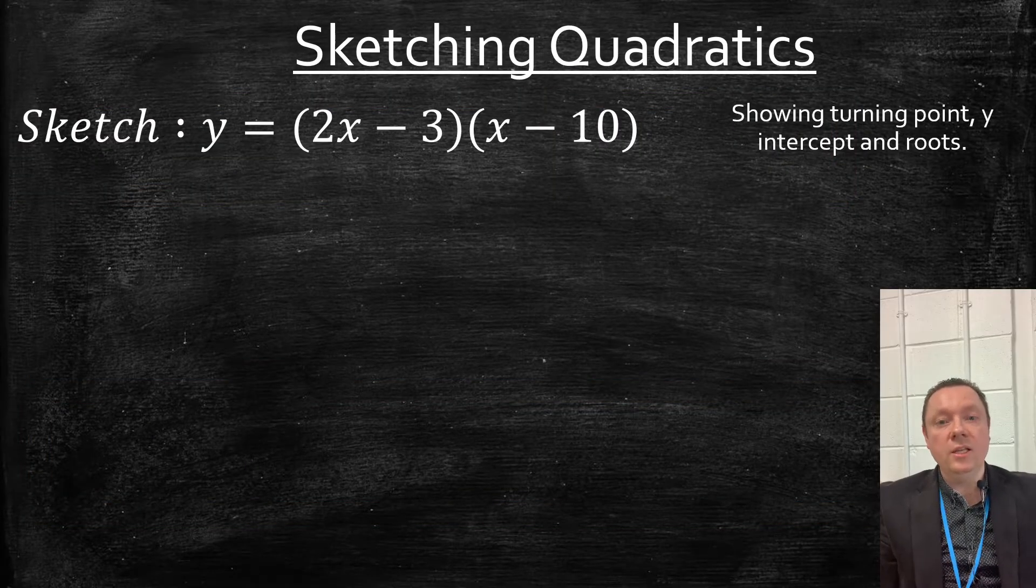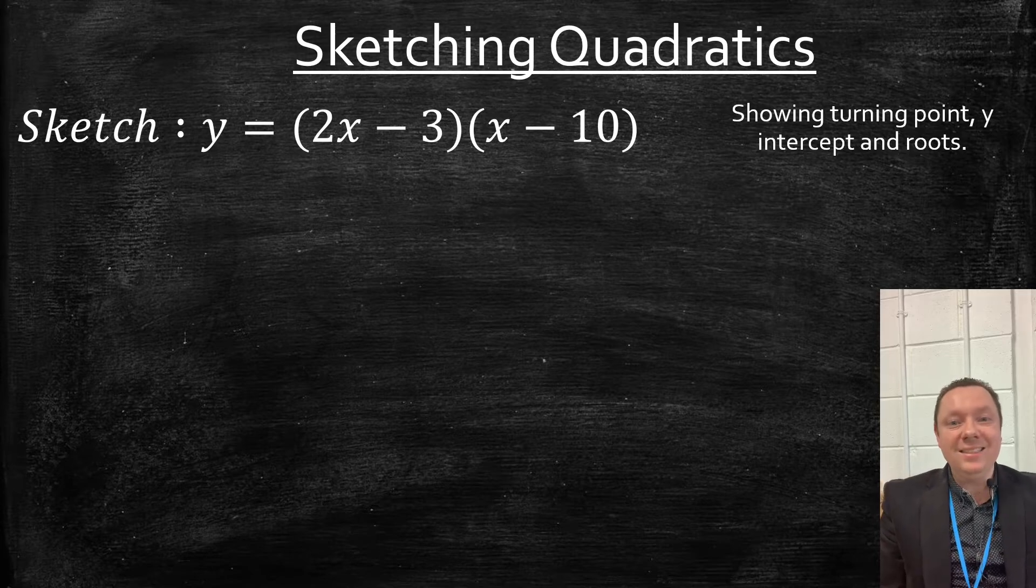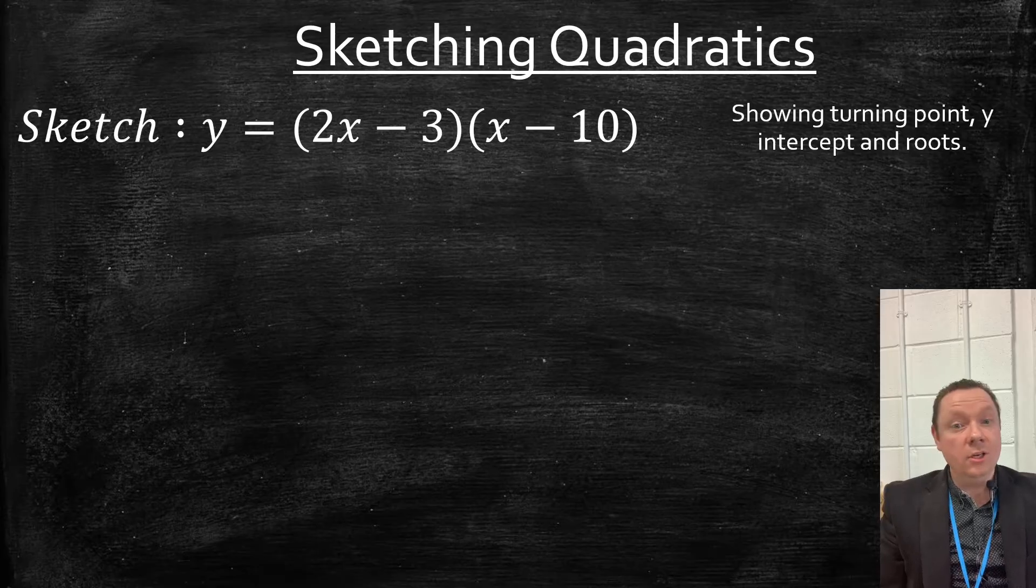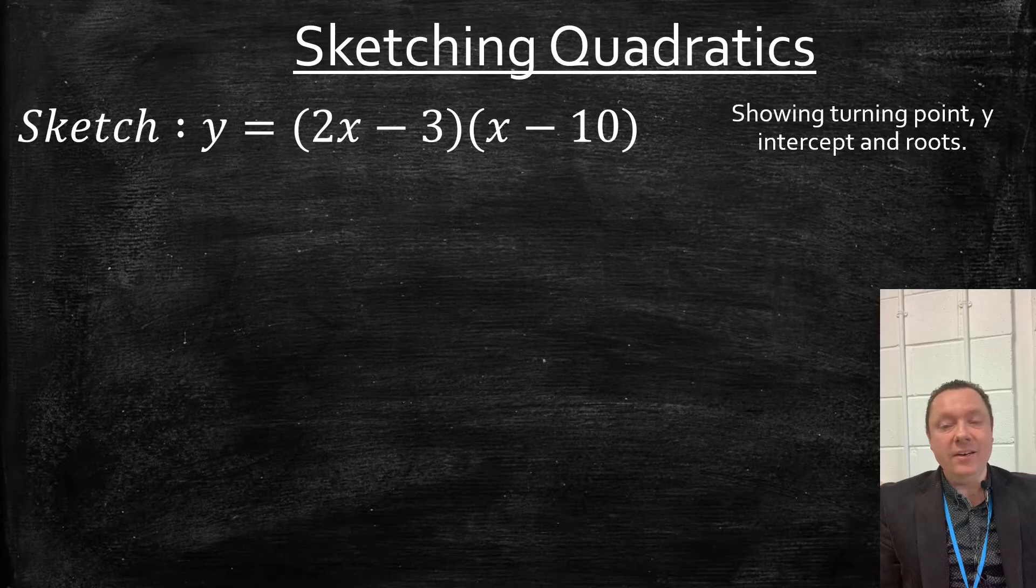In the 2022 National 5 exams, if you're asked to sketch a quadratic, it will be from factorised form, and you'll be asked to show the turning point, the y-intercept, and the roots. Remember, roots are just where it cuts the x-axis.